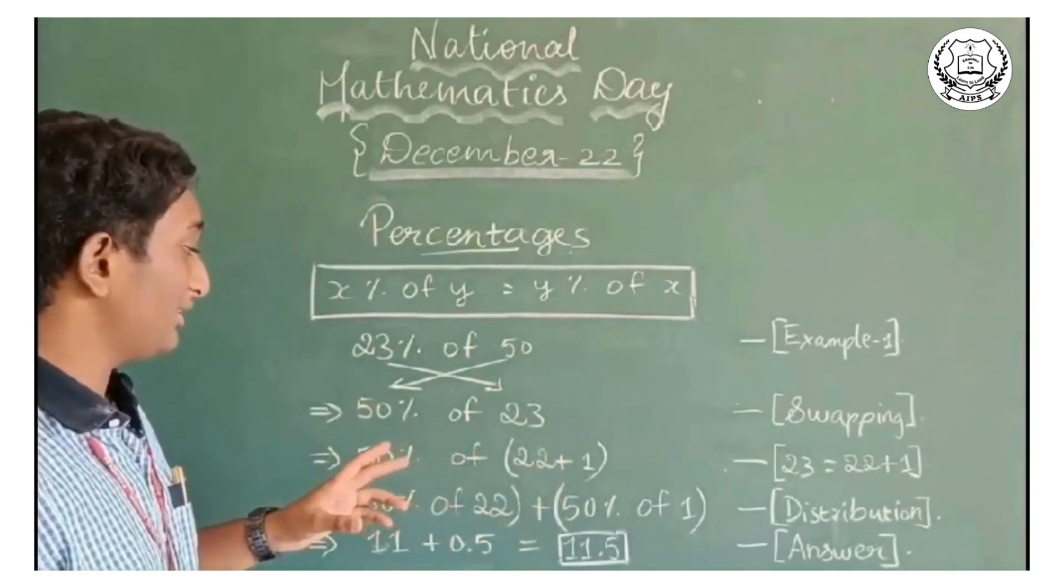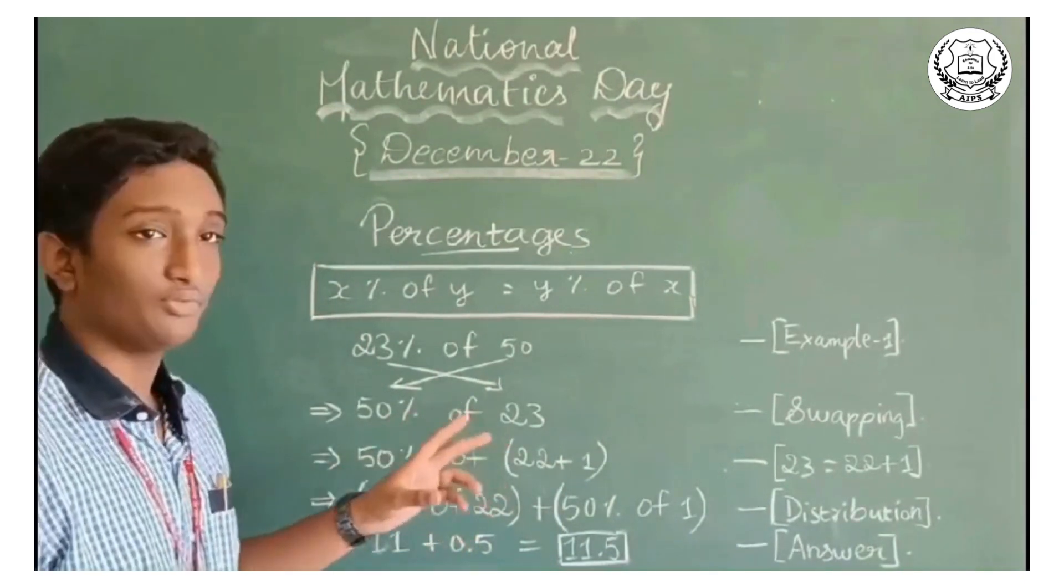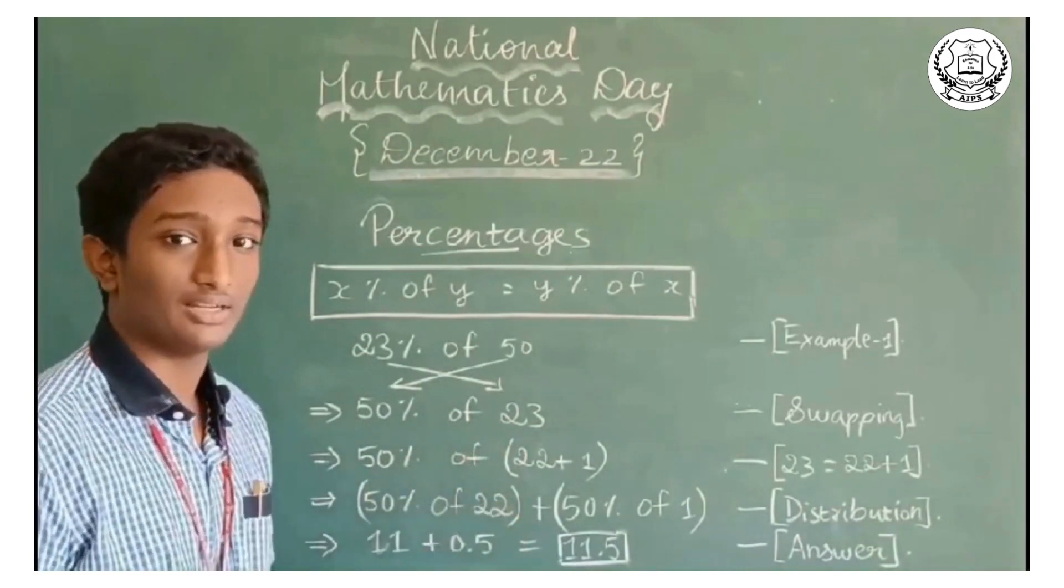50 percent of 23, in which 23 can be written as 22 plus 1. Half of 22 is 11 and half of 1 is 0.5. When we add both of them, we get the answer 11.5, which is the final answer.